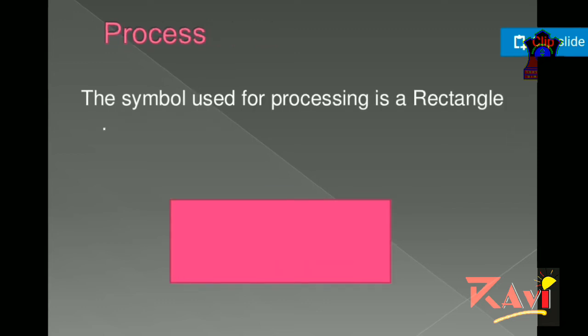Now third is processing box. It is a rectangle shaped box that is used to show the processing part of the flowchart, like calculation. It is rectangular in shape.